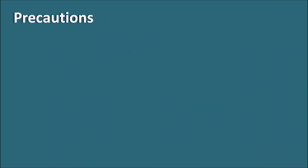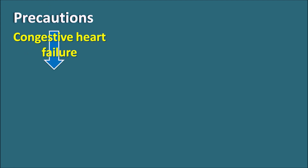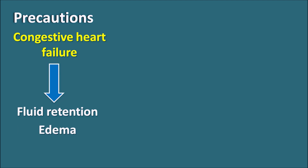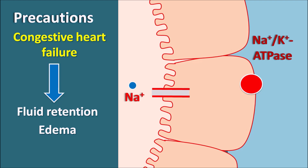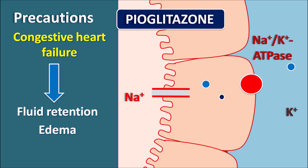An important precaution is congestive heart failure. Pioglitazone increases fluid retention and can produce edema due to its action on the renal tubules. At the collecting tubules, sodium is reabsorbed from the filtrate into the tubular membrane through renal tubular sodium channels, and then into systemic circulation via the sodium-potassium ATPase pump at the basolateral membrane — exchanging one potassium ion. Pioglitazone stimulates these renal tubular sodium channels, causing increased sodium reabsorption and therefore fluid retention.